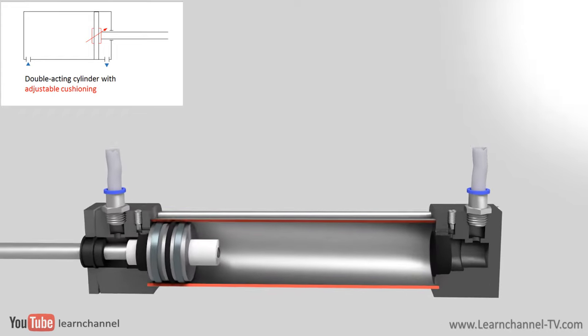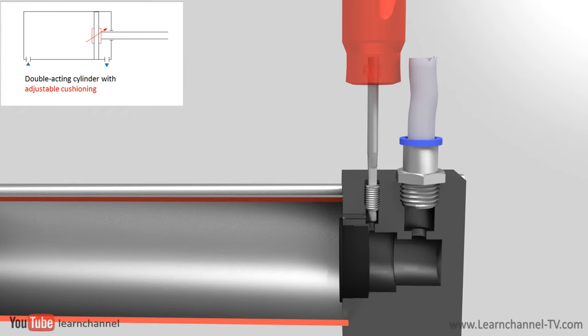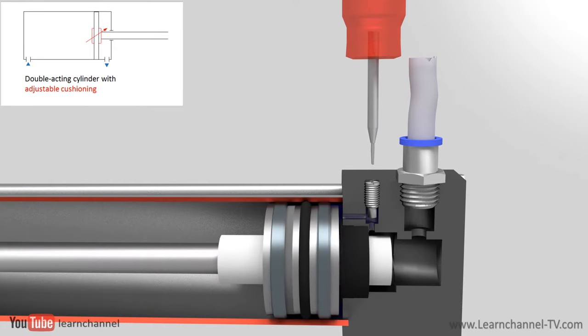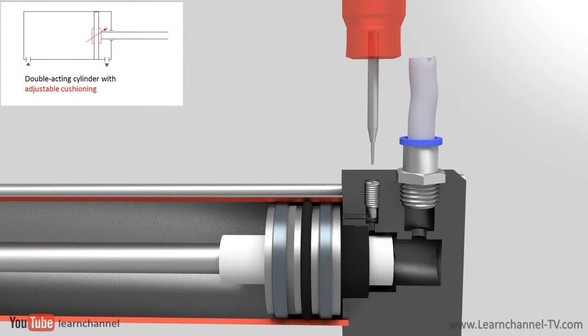By trapping a certain volume of air in the end position, a braking effect can be generated. With an adjustment screw, you can get the ideal cushioning. Too much cushioning results in slow strokes, and too little cushioning increases the end of stroke shock.